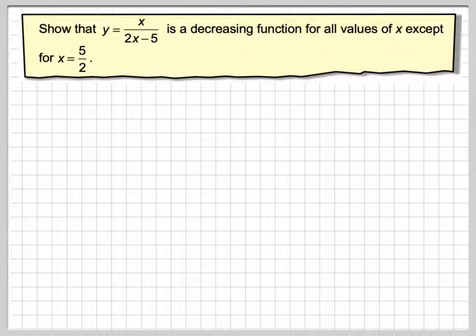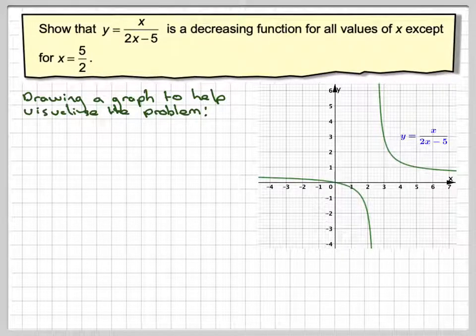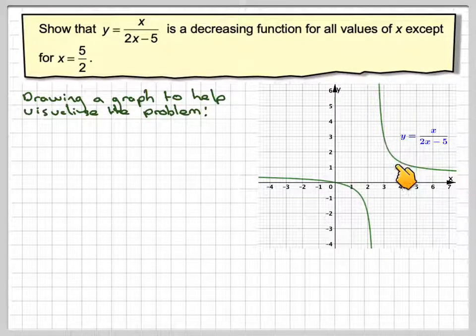x equals 5 over 2. Now if we draw a graph to visualize the problem, we can see that here the gradient of this graph will always be negative for every single value of x.